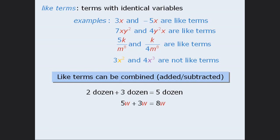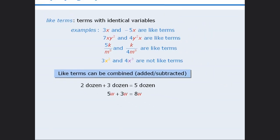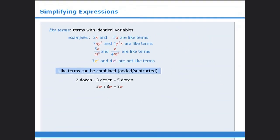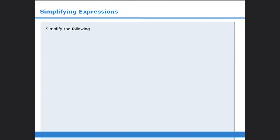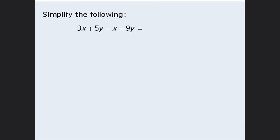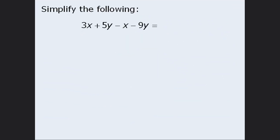This process of combining terms is called simplifying. To simplify this expression we need to recognize that we have some like terms that can be combined. Here we have 3x and negative 1x. Since these are like terms we can combine them: 3x minus 1x simplifies to be 2x.